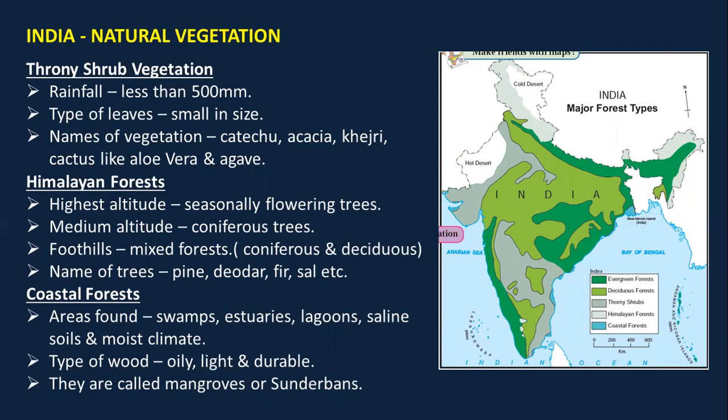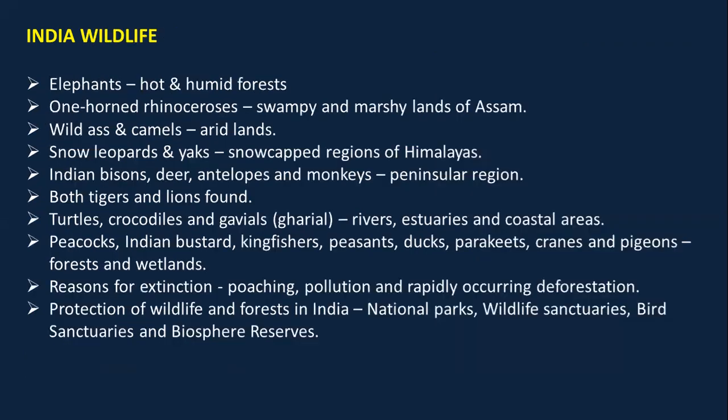Finally, we have coastal forests. Coastal forests are found in areas with swamps, estuaries, lagoons, saline soils, and moist climate — basically wherever there is a water presence. The wood here is oily, light, and durable. They are also called mangroves or Sundarbans. The delta formed by the Ganga and Brahmaputra is the Sundarbans, where sundari trees grow — these come under coastal forest.